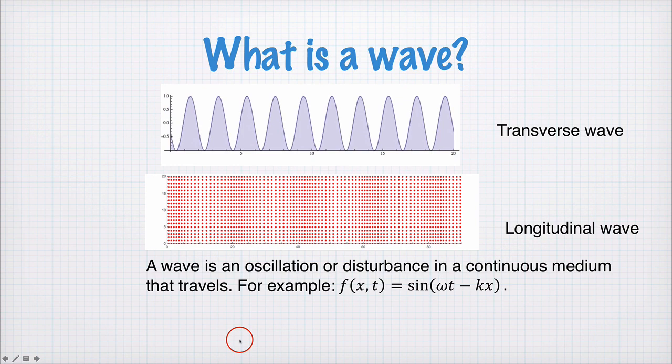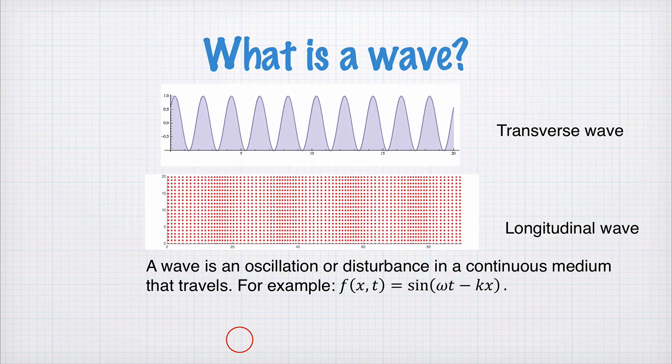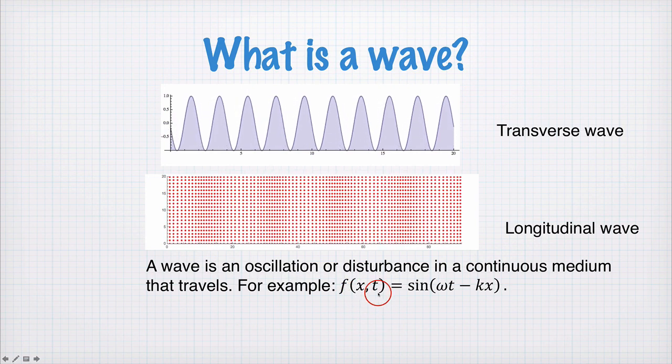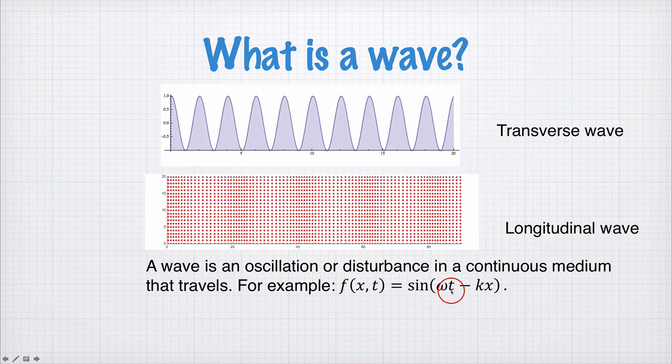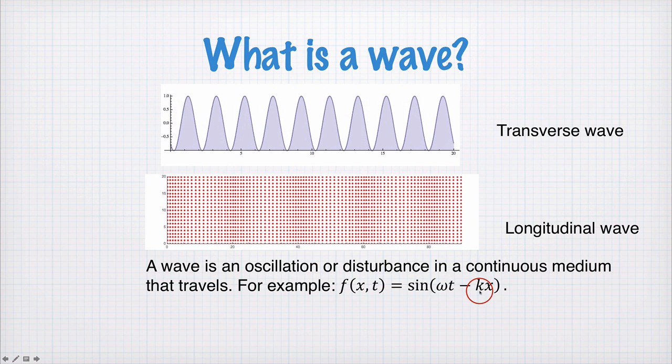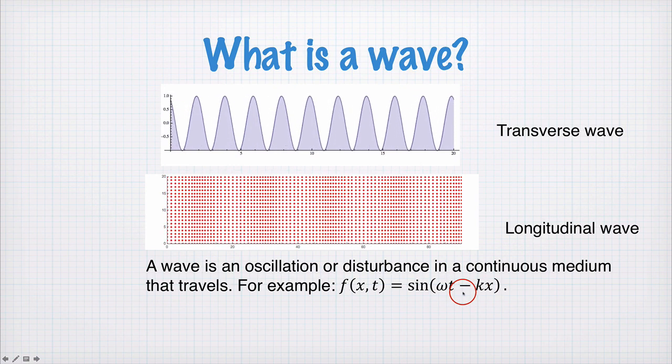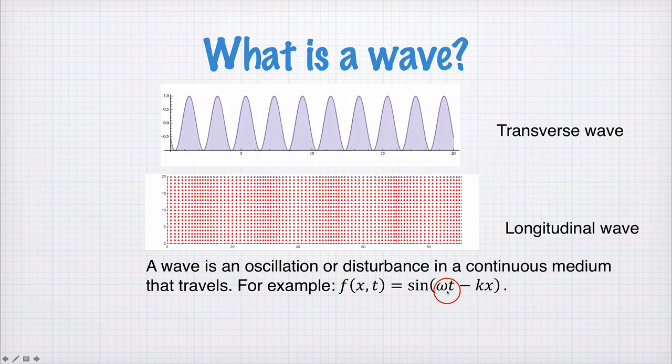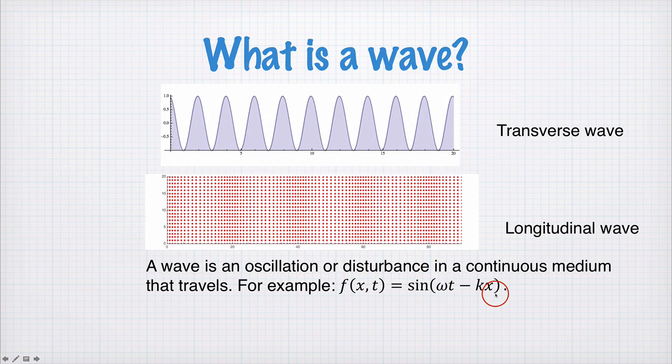So a wave is an oscillation or a disturbance in a continuous medium that travels. For example, we might have a function of space and time that is sin(ωt - kx), where ω and k are constants. And this would be a sinusoidal wave, like these two waves here are in fact sinusoidal. This is not the only kind of wave, it's just an example of a wave.